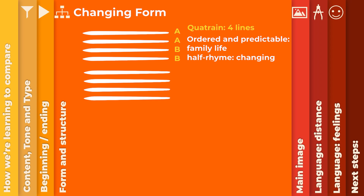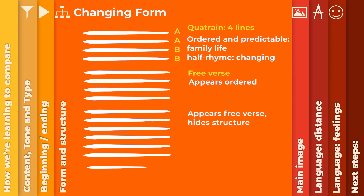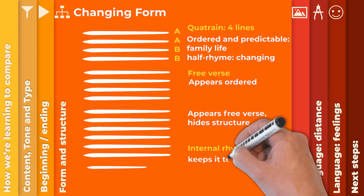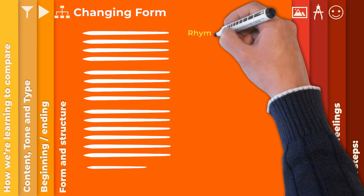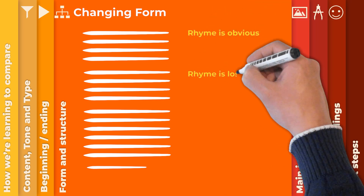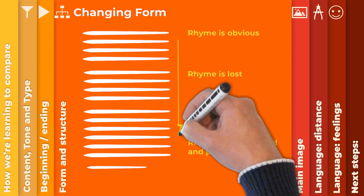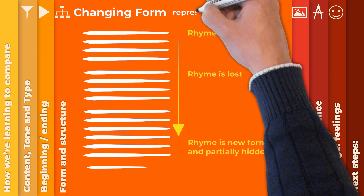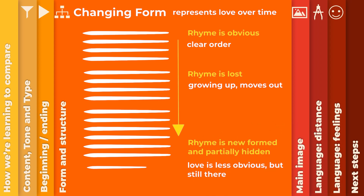The second stanza has the appearance of structure, but it's actually free verse, having no rhyme or identifiable rhythm. The final stanza looks like free verse, but actually hides internal rhymes that keep it flowing and together. So if we take a step back, we can see the rhyme is obvious and clear at the start, it becomes lost in the middle, but returns new-formed and partially hidden at the end. I would argue that it represents their love and their relationship, which starts with clear order and structure, but that changes as he gets older and moves out. But it's still there — their love is less obviously external, but more internal by the end of the poem.